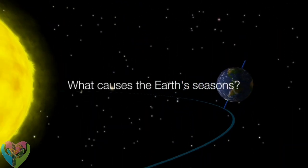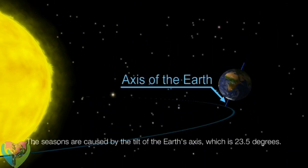What causes the Earth's seasons? The seasons are caused by the tilt of the Earth's axis, which is 23.5 degrees.